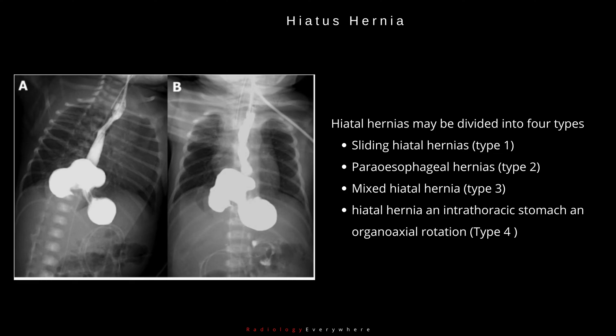Hiatal hernias may be divided into four types: Type 1 - sliding hiatal hernias; Type 2 - paraesophageal hernias; Type 3 - mixed hiatal hernia; and Type 4 - hiatal hernia with intrathoracic stomach and organoaxial rotation.